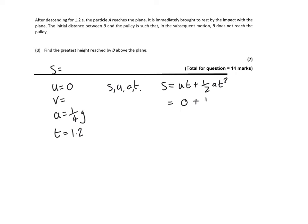We know that it starts from rest. We know what the acceleration is, and we're given the time in this part of the question. So we're going to go on and find S. S is the distance to the ground using the SUVAT equation on the screen. It's 1.764 metres.